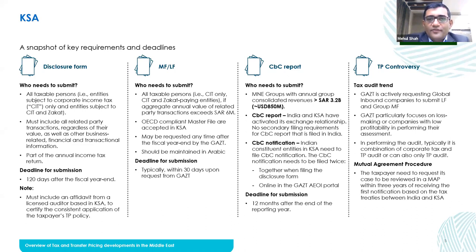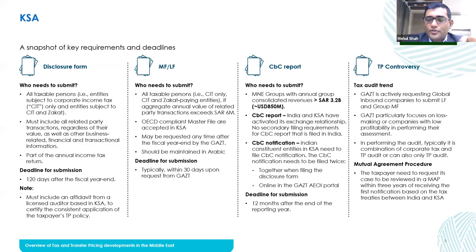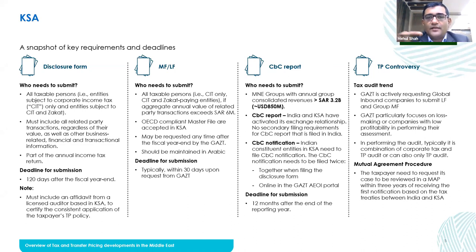In terms of notification, CBC reporting — as we looked at in UAE as well — has two stages. One is a notification and one is the actual filing of the CBCR report. For an Indian constituent entity operating in KSA, they just need to file a notification, and the notification needs to be filed twice: when filing the disclosure form and then an online filing in the Zakat, Tax and Customs Authority portal. Countries have been having information exchange programs, and if that has been activated, it becomes easier for governments to access.